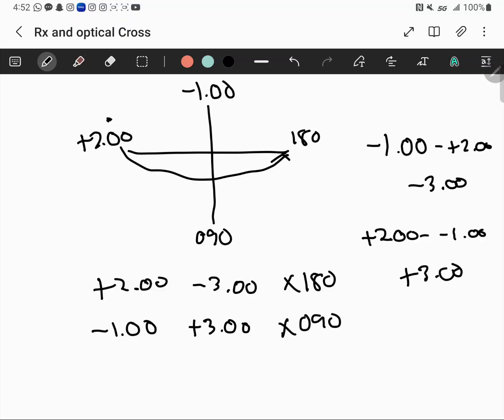This needs to make sense. The cylinder is not a power on the lens - it's simply the difference between the two spherical powers on our optical cross. Both of these powers are sphere powers.